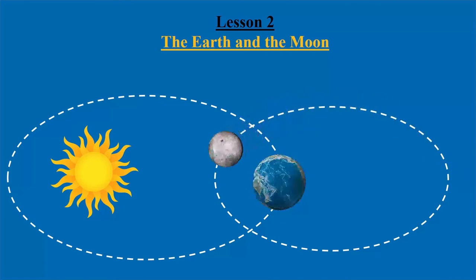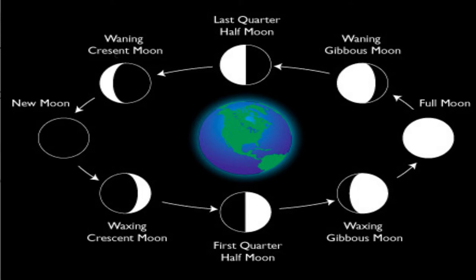Moon takes 27 days, 7 hours and 43 minutes to complete one revolution around the Earth. The Moon appears in different shapes at different times and different positions.